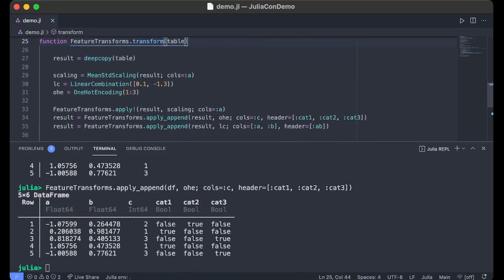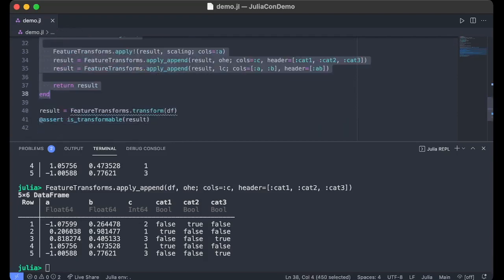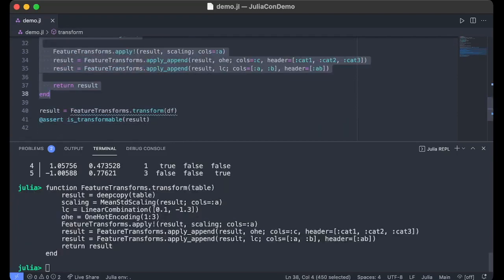If we wanted, we can compose these operations into a basic feature engineering pipeline by extending the transform function. A soft requirement of this method is that its output is also transformable. And since each transform returns a data frame, it makes it easier to enforce that contract.